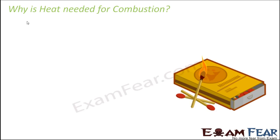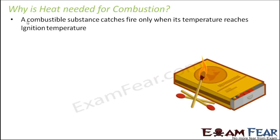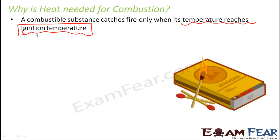So basically what this example tells us is that any combustible substance catches fire only when its temperature reaches ignition temperature. A substance will not catch fire just any time on its own — it will catch fire only when its temperature reaches a particular value. In order for the temperature to reach that point, some heat must be provided. That is why heat is needed for combustion.